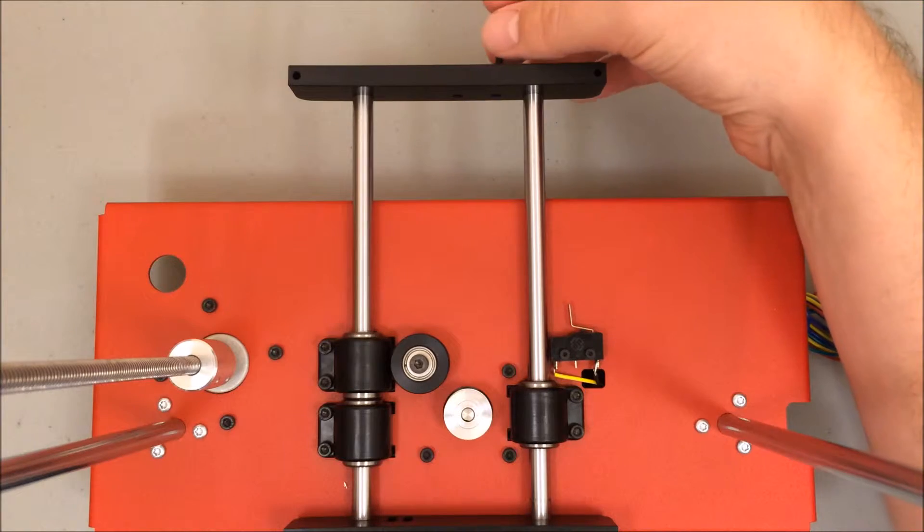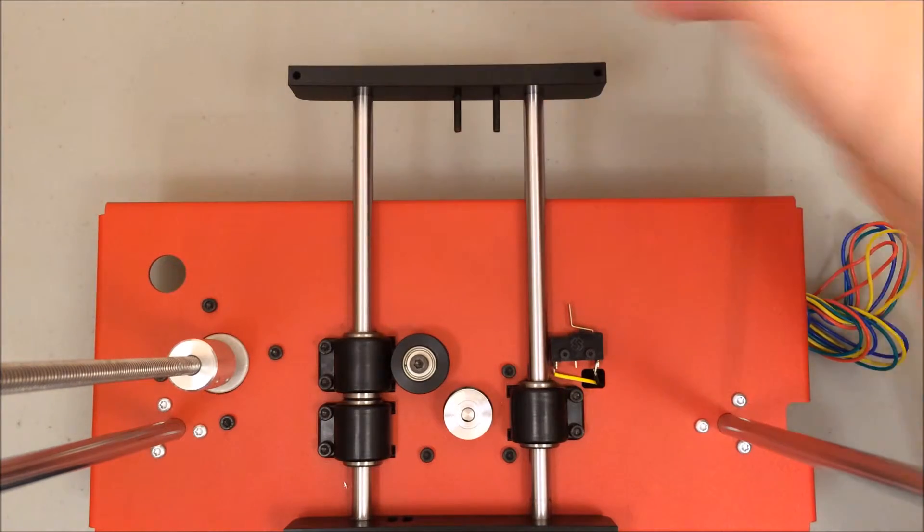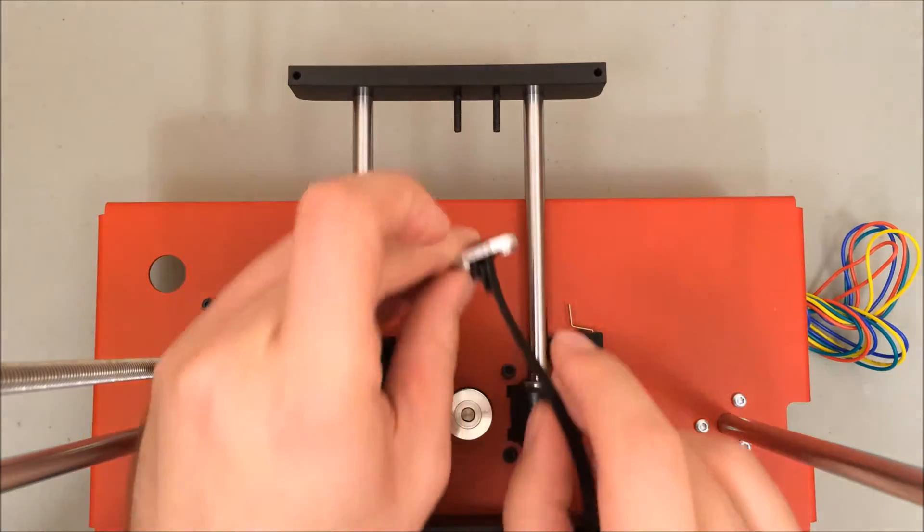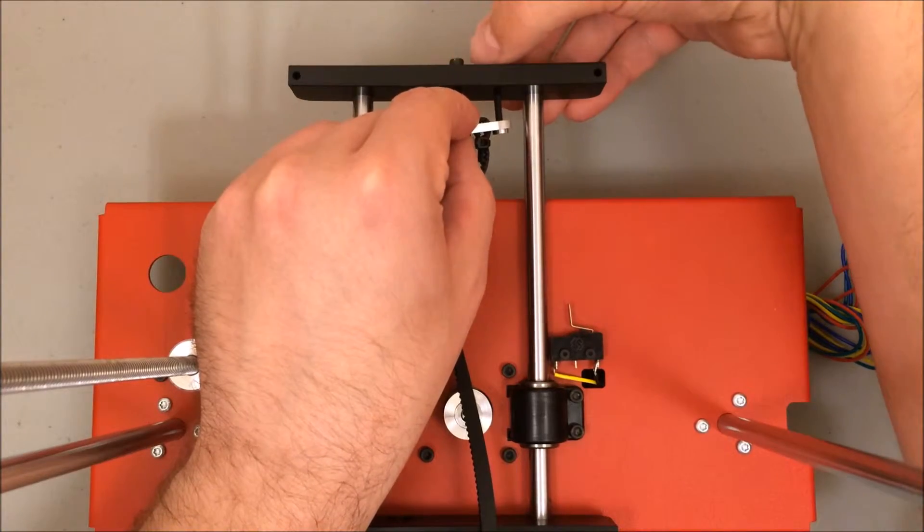Take your M3 22 millimeter screws and feed it through the back rod end. Then take that tensioner, position it so that the longer side is on your right, and just get the screws started into the tensioner.